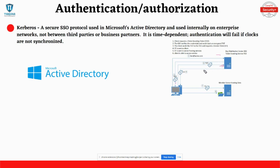That service ticket is sent back down to the client, and then the service ticket is sent to the server hosting data — which could be a file share or file server — and the client is able to access that service. This gives you the bottom line up front of how Kerberos works.